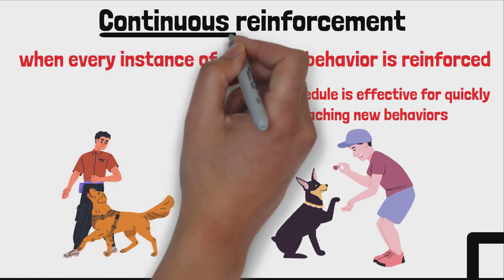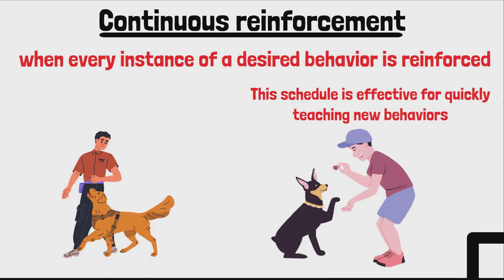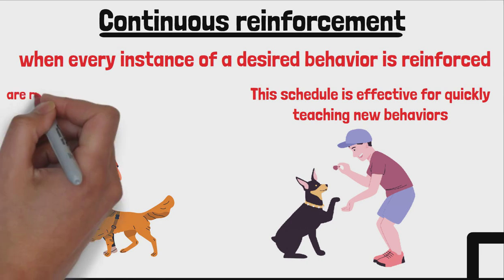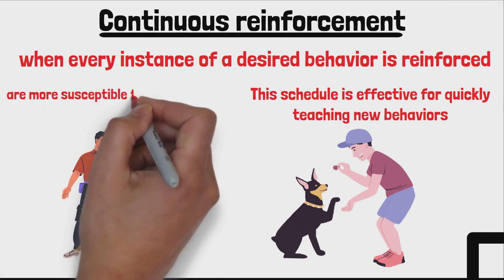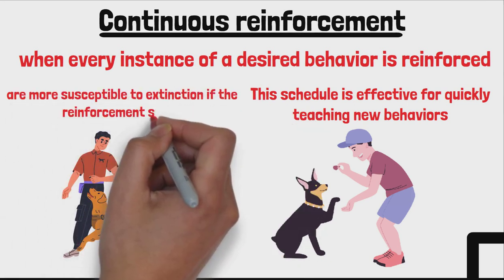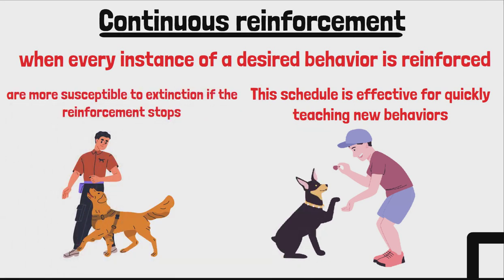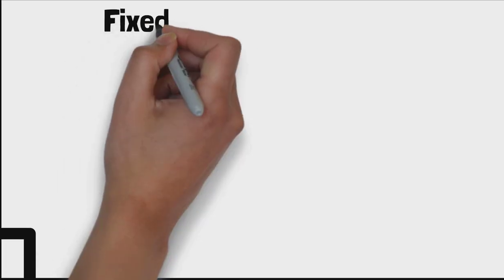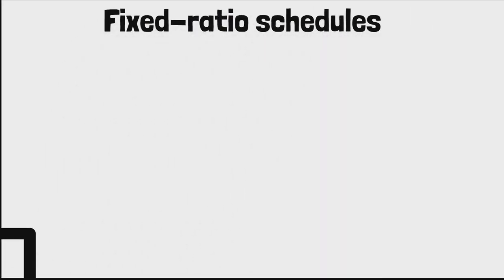However, behaviors learned through continuous reinforcement are more susceptible to extinction if the reinforcement stops. Second is fixed ratio schedules.